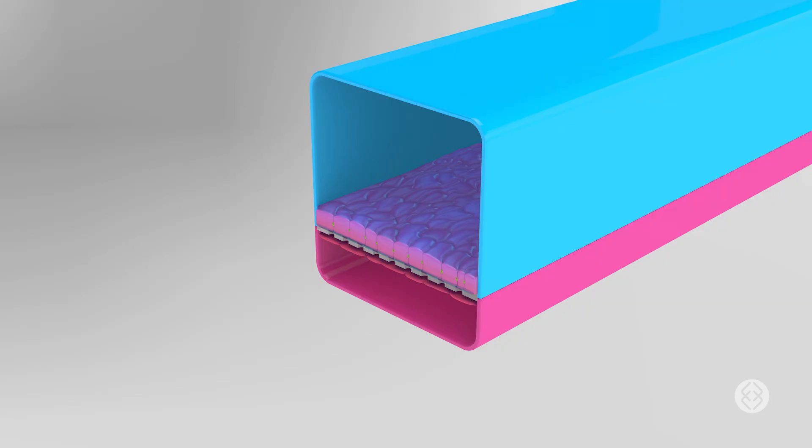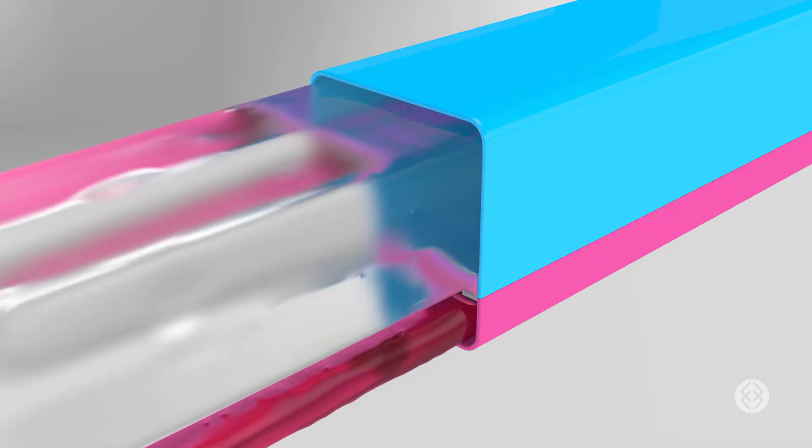Nutrient-rich media flows through the top channel, while media that emulates blood flows through the bottom channel and applies shear stress to the cells.